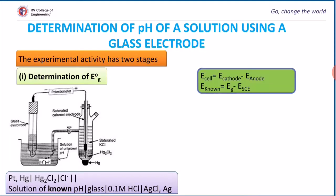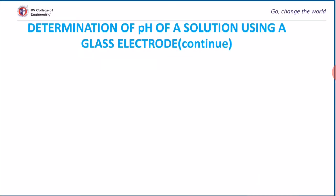E cell can be calculated using the relation E cathode minus E anode. On rearranging, we can calculate the EG value. We know that EG value equals E naught minus 0.0591 pH. As the pH is known, we can calculate the E naught value in the first step.